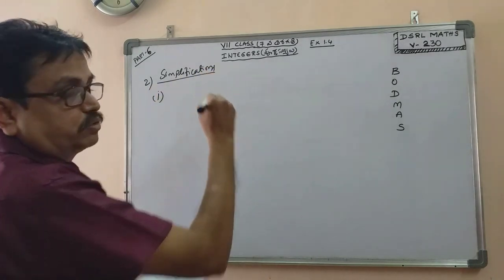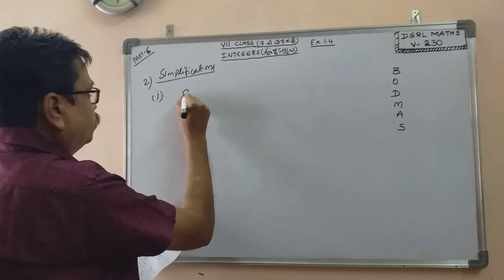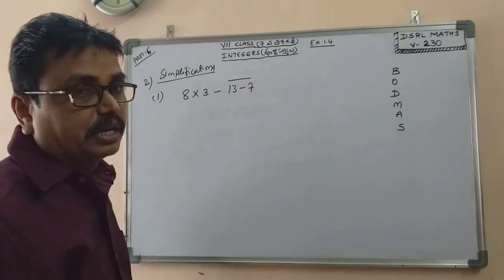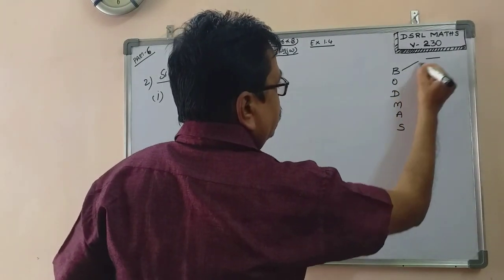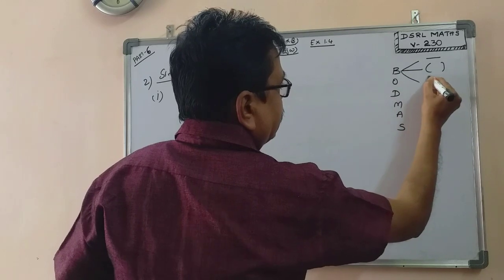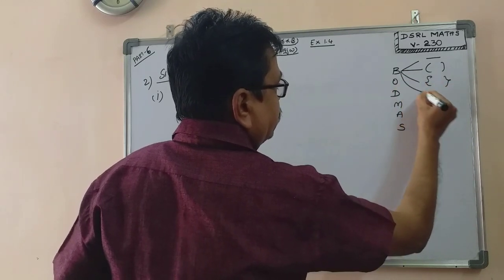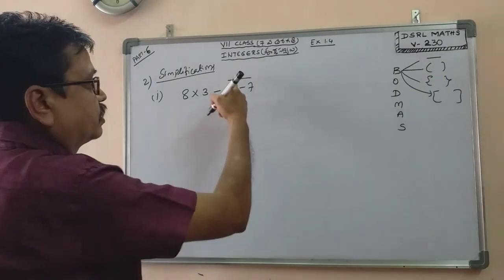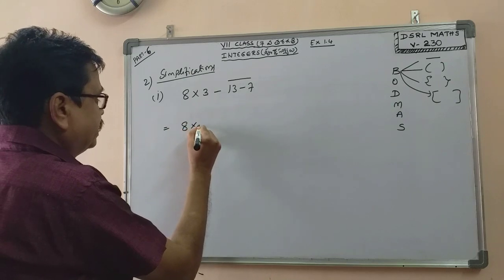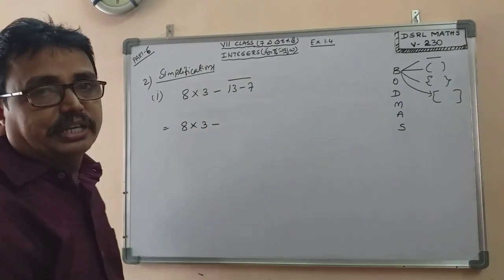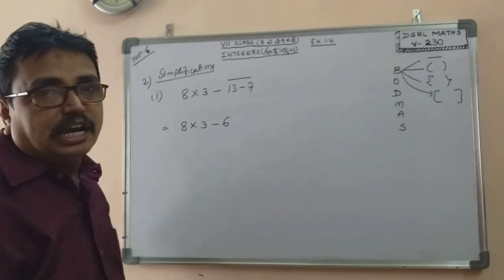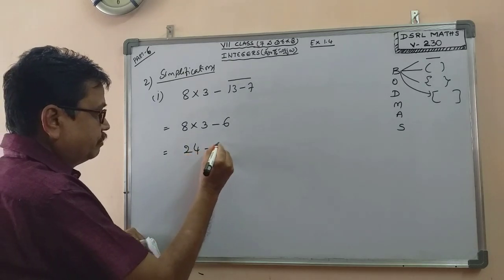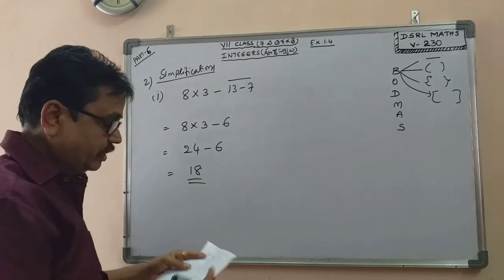Next example: 8 into 3 minus 13 minus 7. Here we have a viniculum, a small bracket, a curly bracket, and a square bracket. The viniculum: 13 minus 7 equals 6. Then multiplication: 8 into 3 minus 6. Next: 24 minus 6 is 18. The answer is 18.